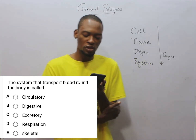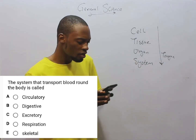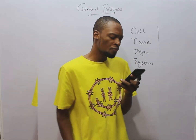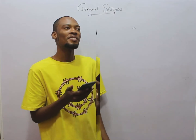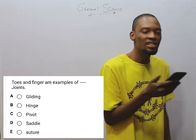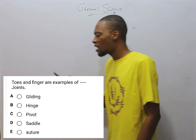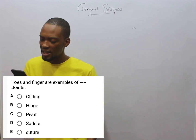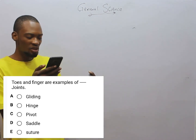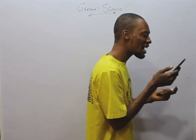The next question says: toes and fingers are examples of what type of joint — hind joint or hinge joint? The joint found in toes and fingers is the hinge joint.